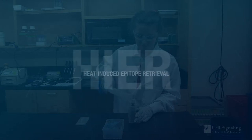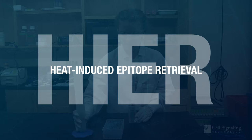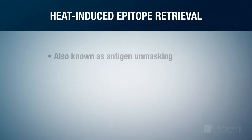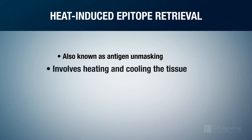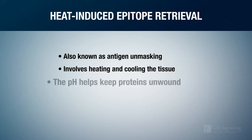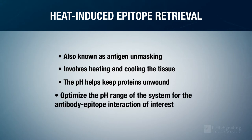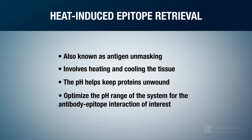At Cell Signaling Technology, we most often use heat-induced epitope retrieval when testing our antibodies, so this is the method we will discuss in detail. Heat-induced epitope retrieval, also known as antigen unmasking, involves heating and cooling the tissue sections while they are immersed in a solution with a defined buffering capacity. The pH of the buffer helps keep the proteins unwound after the temperature is returned to normal, so the pH range of the system should be optimized to the antibody-epitope interaction of interest.